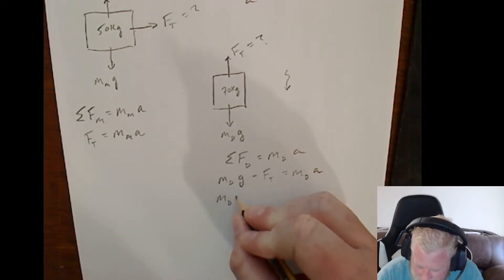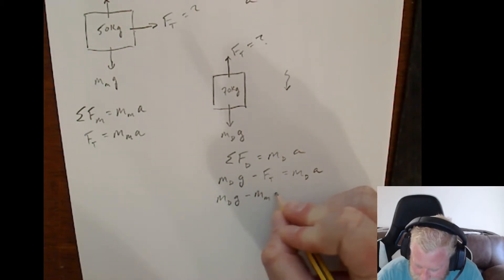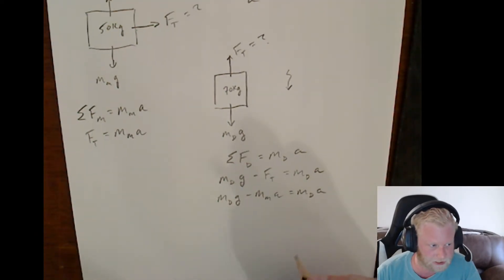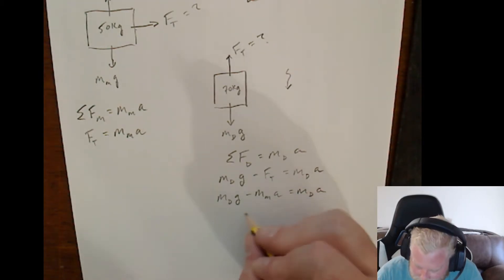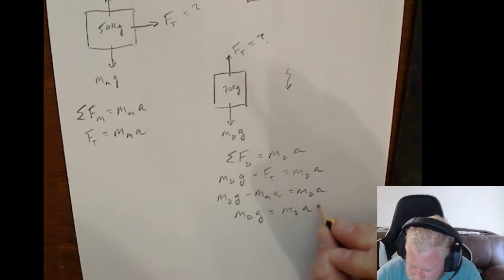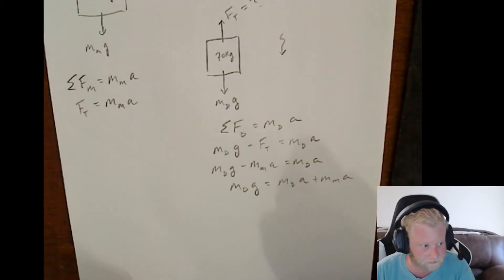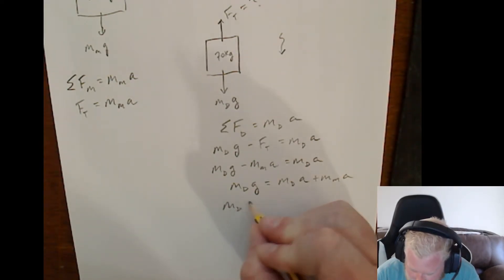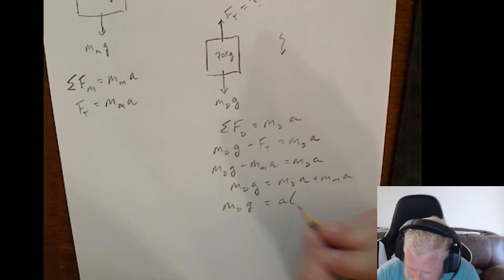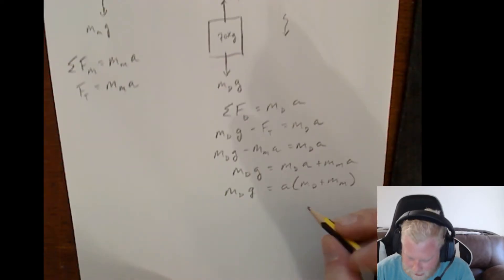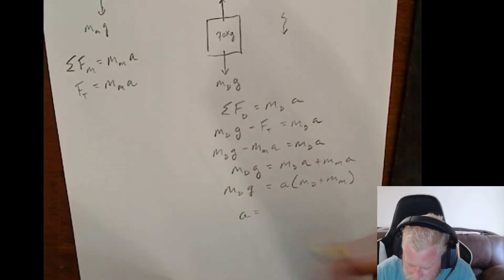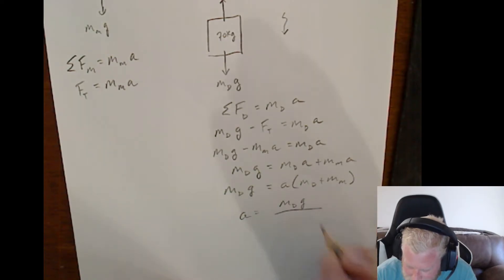So, mass of Don times g minus mass of Mary times a is equal to mass of Don times a. Let's get all of our unknown value on the same side. So, mass of Don times g is equal to mass of Don a plus mass of Mary times acceleration. Mass of Don times g is equal to acceleration times mass of Don plus mass of Mary. So, our acceleration is equal to mass of Don times g over the combined masses of the two.